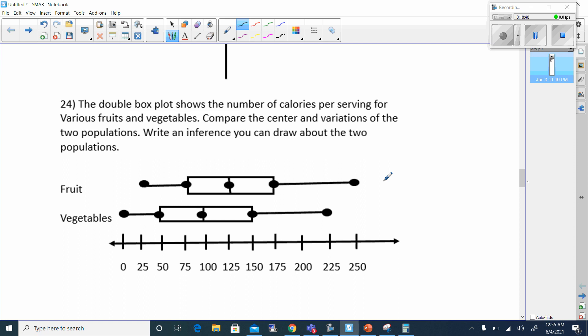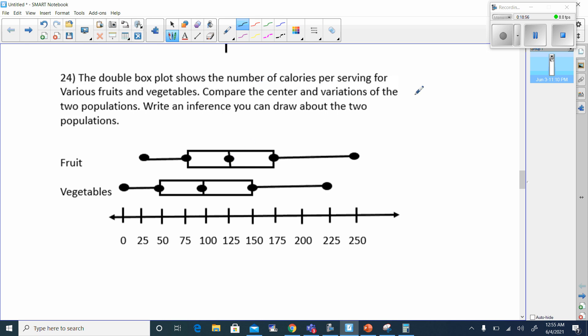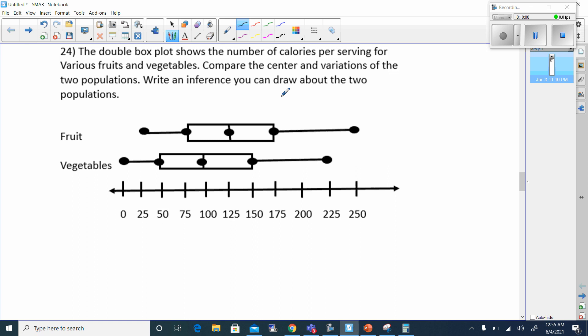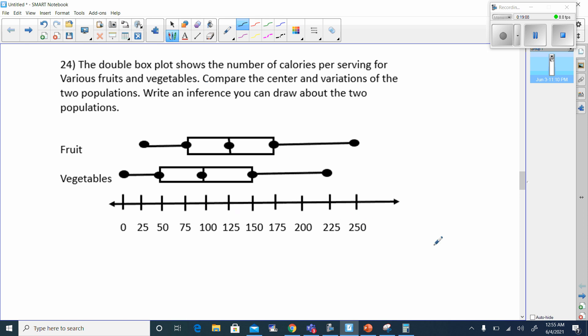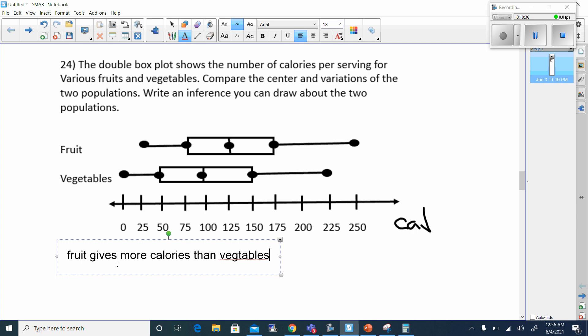And last one, the double box plot shows the number of calories per serving for various fruits and vegetables. Compare the center and variation of the two populations. Write an inference you can draw about the two populations. I can say that, the number of calories, and that tells me that fruit, on the average, gives you more calories than vegetables. Fruit gives more calories than vegetables. That would be my inference.